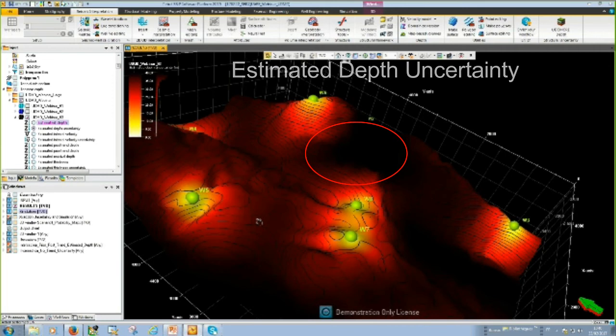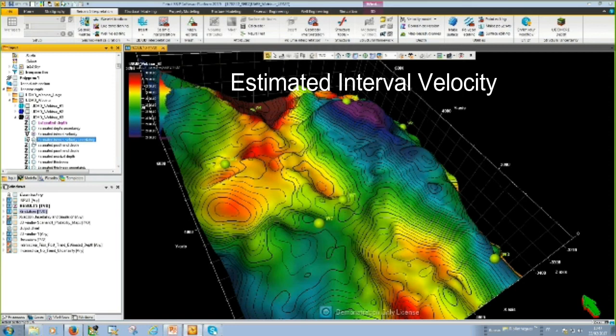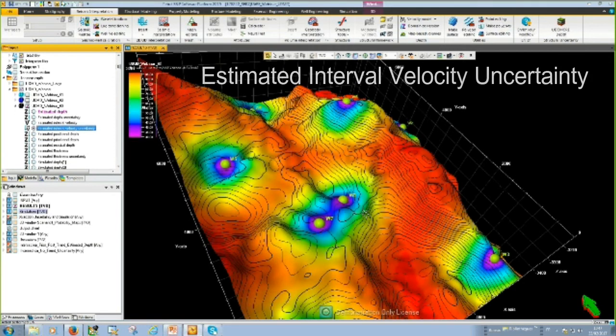We computed also estimated interval velocity, which is tied to the wells. And we computed estimated interval velocity uncertainty. You could see that near the wells uncertainty is very low. Further from the wells, it's 95 meter per second uncertainty.